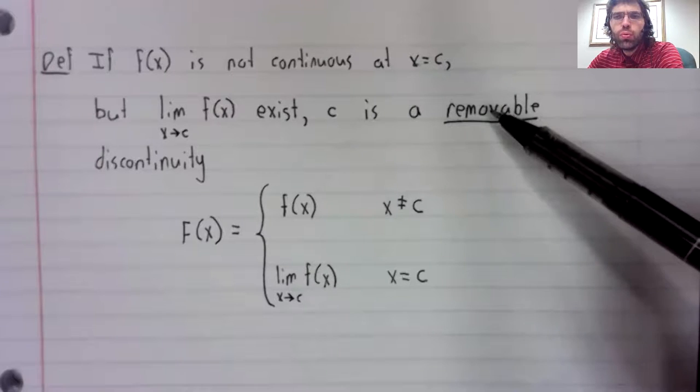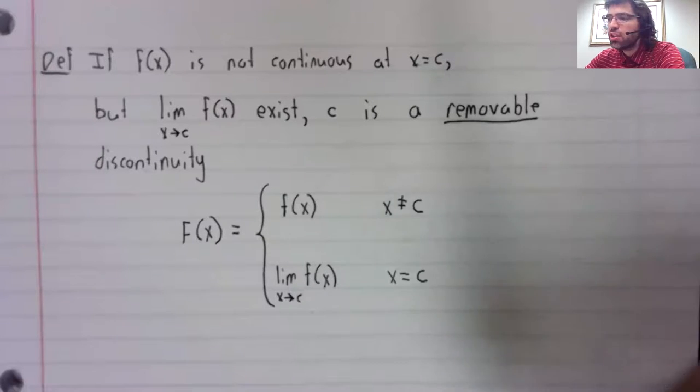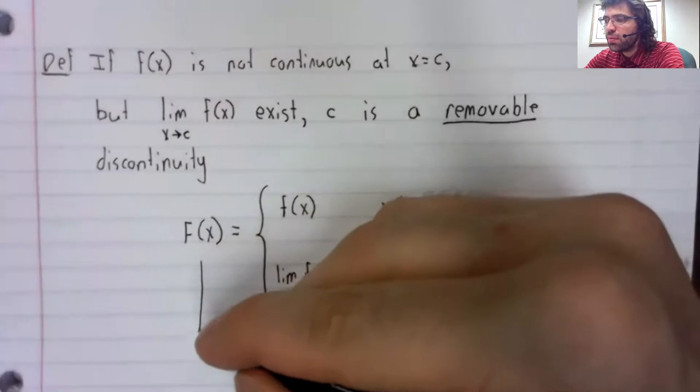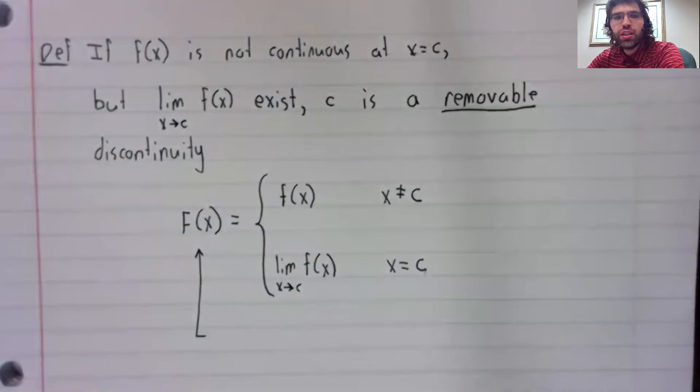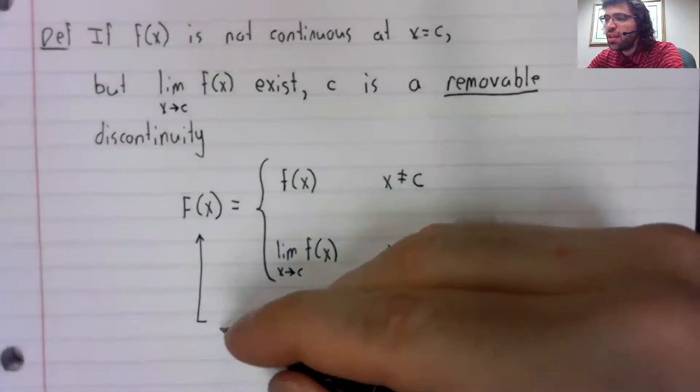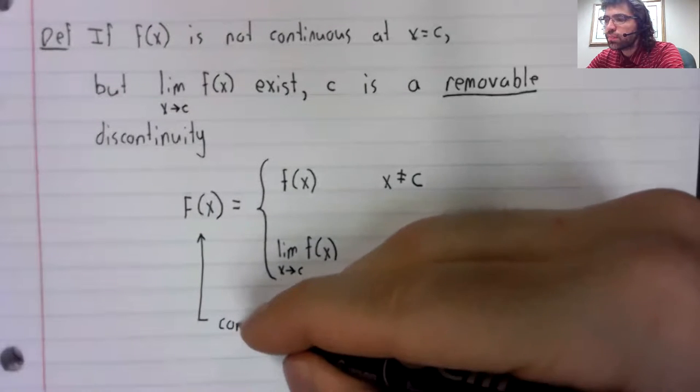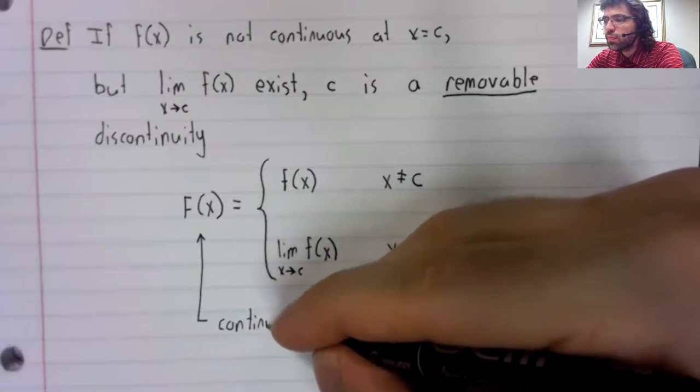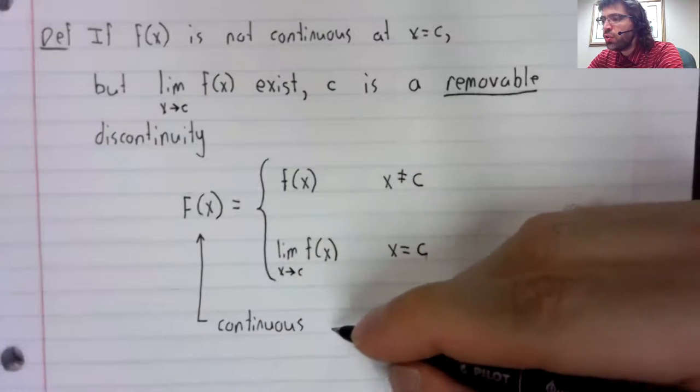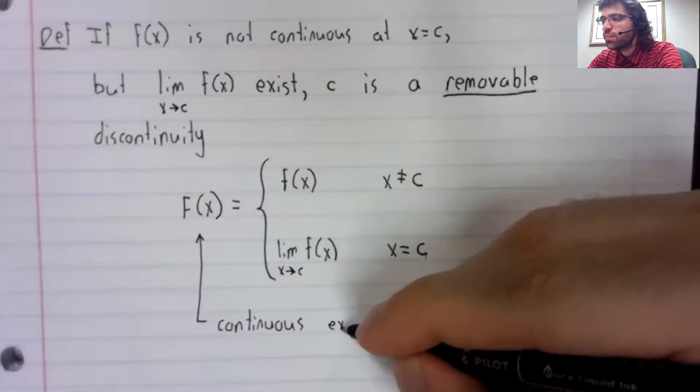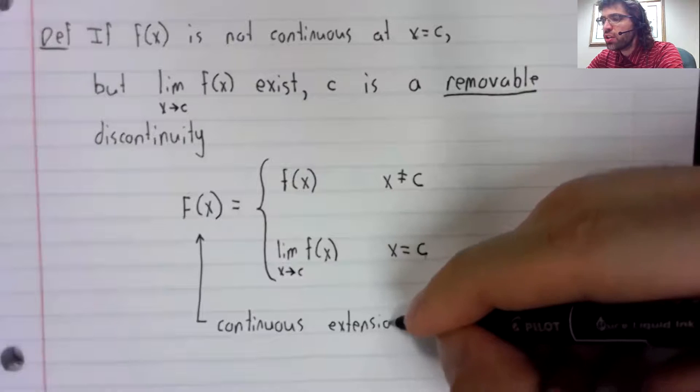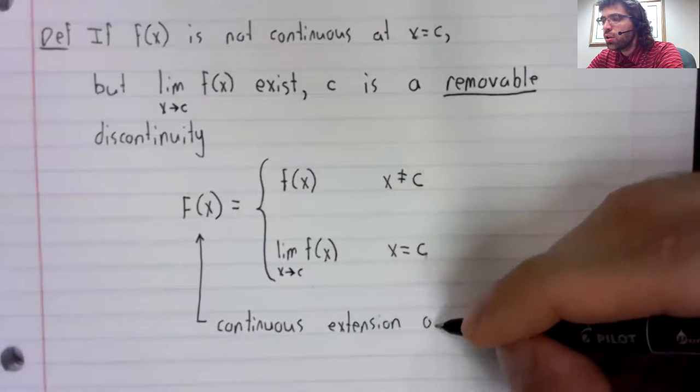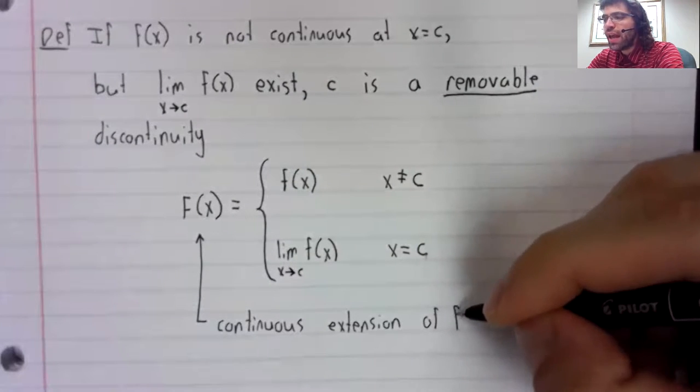So we have removed the discontinuity. This function has a name: it's the continuous extension of f.